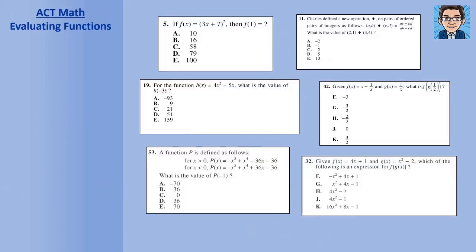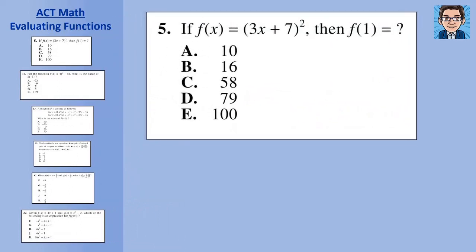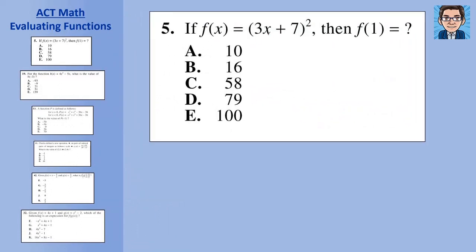I've got six problems from the ACT practice test that have to do with evaluating functions. The first one is pretty straightforward: f of x equals (3x plus 7) squared. What's f of 1? We're going to put 1 into this function. So f of 1 is (3 times 1 plus 7) squared, which is (3 plus 7) squared. Make sure we do order of operations—inside the parentheses first. This equals 10 squared or 100. The answer is E.